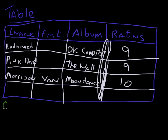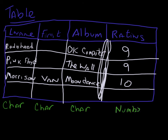Last name is probably going to be character data. First name is also probably going to be character. Album is going to be a character. But my rating — that probably doesn't make sense as a character; I'm probably wanting to have that as a number. In other videos we'll look at all the different types, but for now we'll keep it basic.